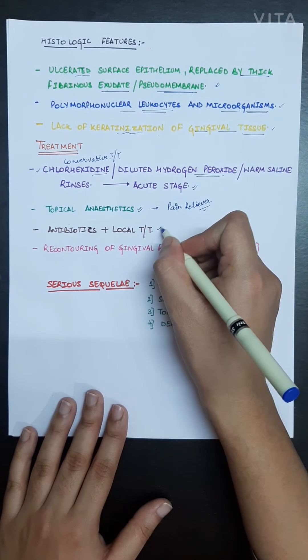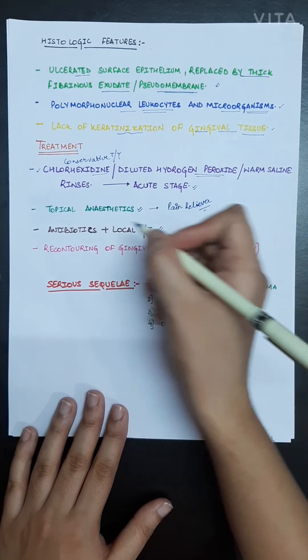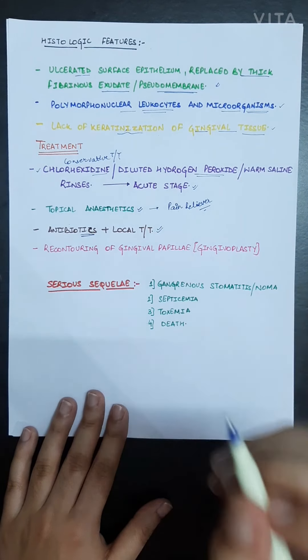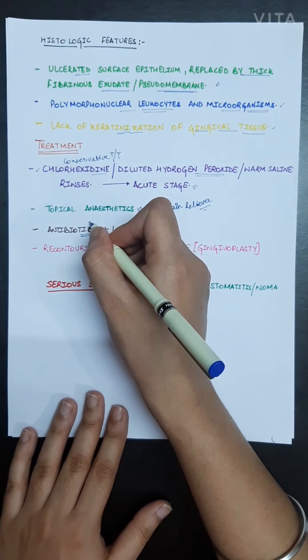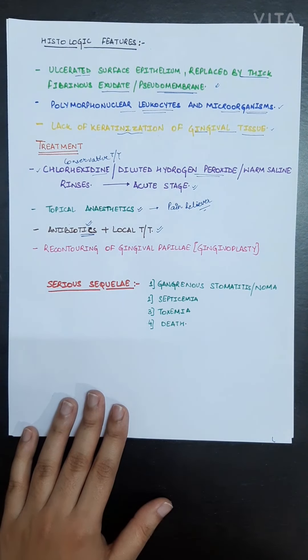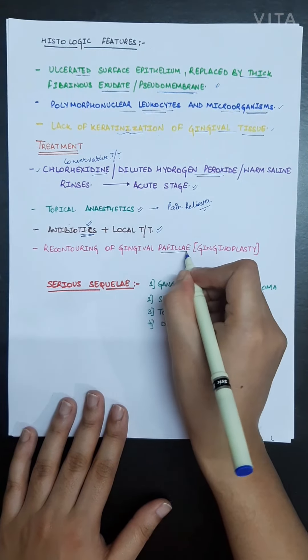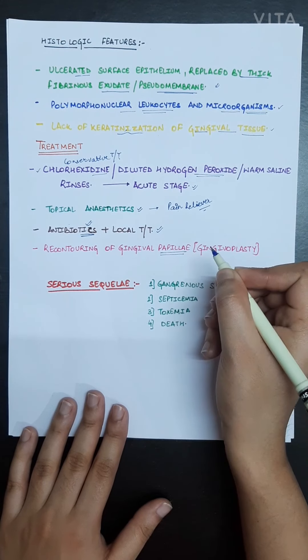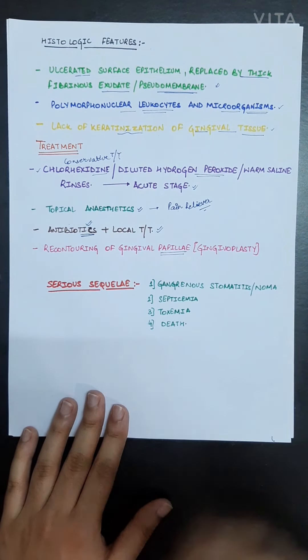Antibiotics plus local treatment is also beneficial as it is a bacterial polymicrobial infection. Recontouring of the gingival papilla is required as the gingiva is necrosed, so shaping the gingiva is required - gingivoplasty can be done.